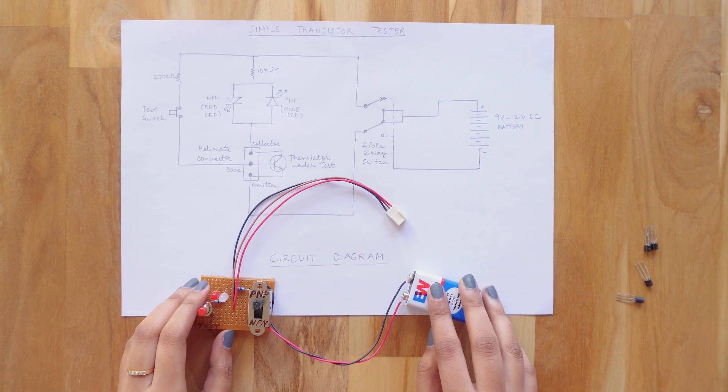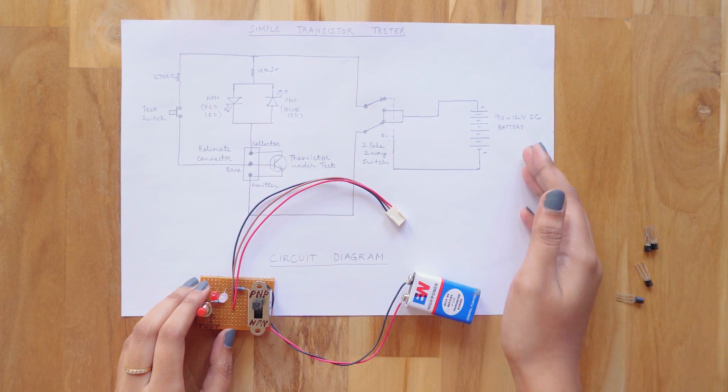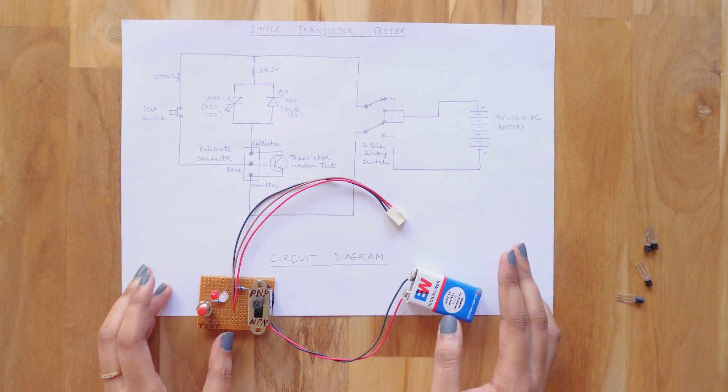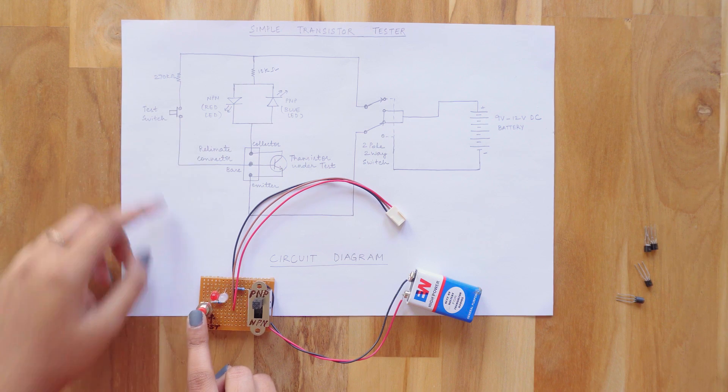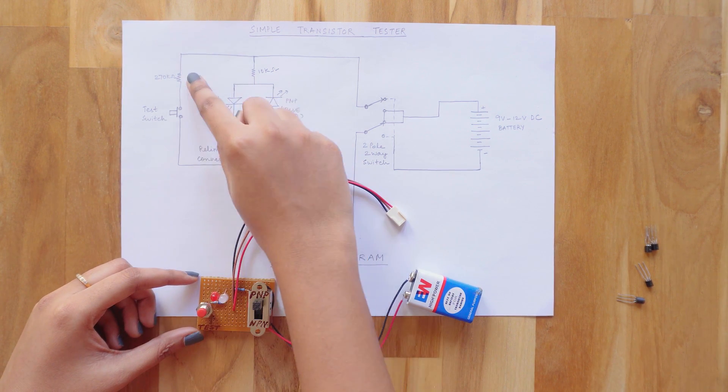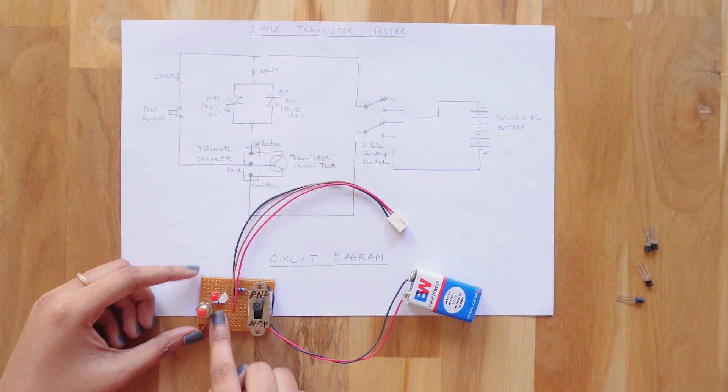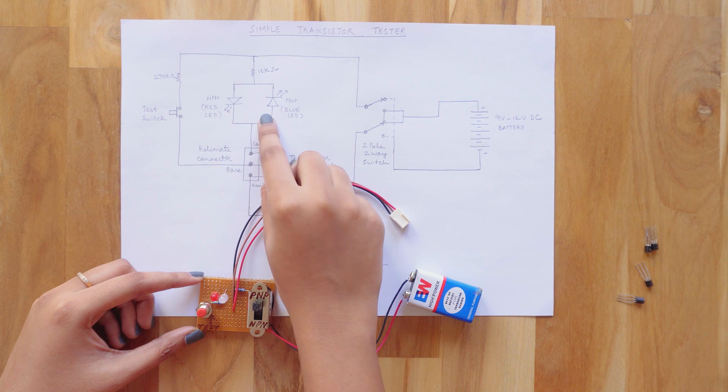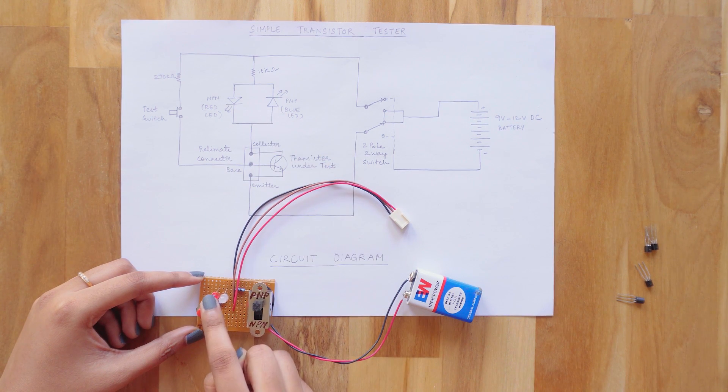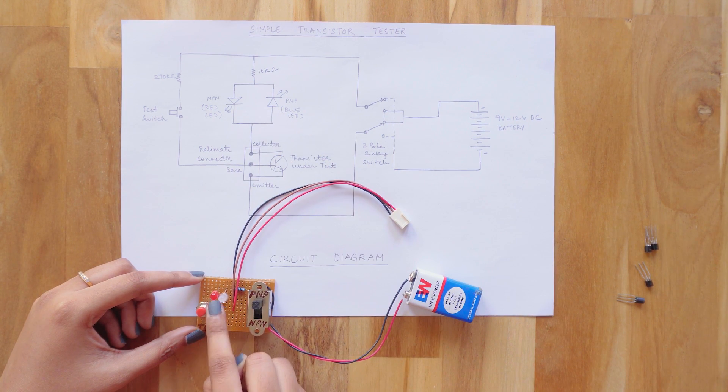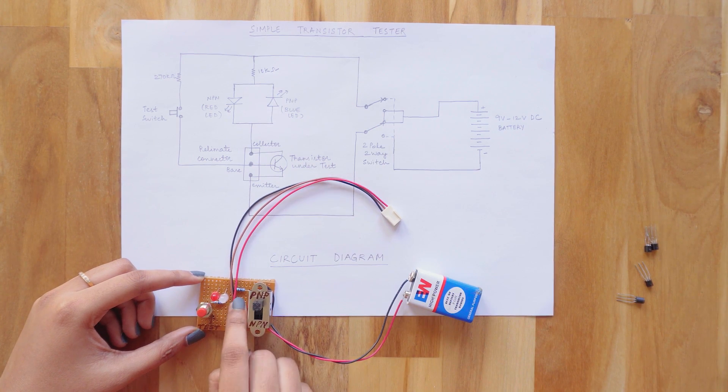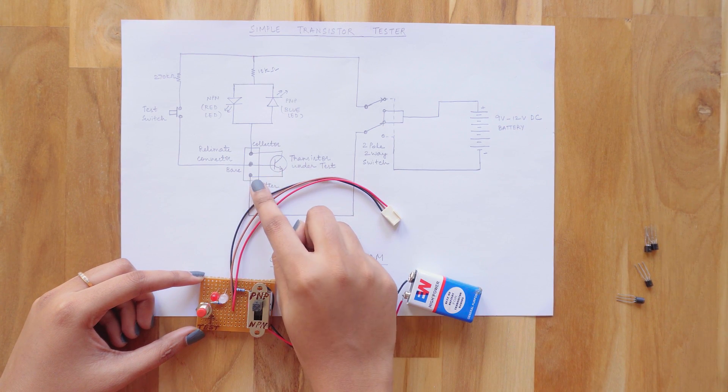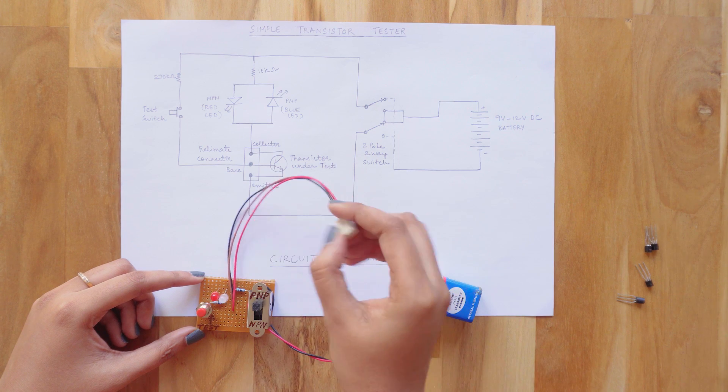Now I'll compare and show you the schematic and the PCB that I have assembled. Here's the push to on switch that I am using as a test switch. And beside that, I've placed the biasing resistor. These are the LEDs in which I am using the red one for NPN and blue one for PNP testing. And I've placed the current limiting resistor here. This one's the relimate connector in which you place the transistor.